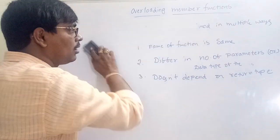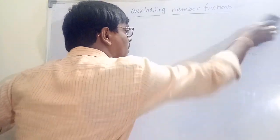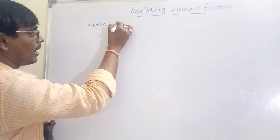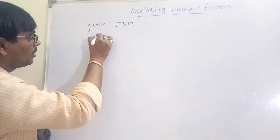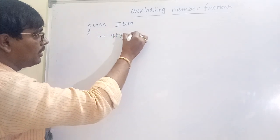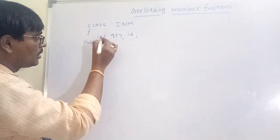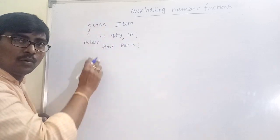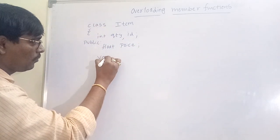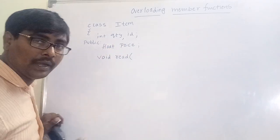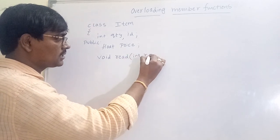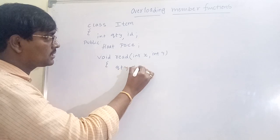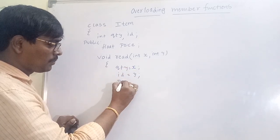Now we will discuss an example — it is very easy to understand each and every concept. Consider class `item` with `int quantity`, `id` as private members and `float price`. The first overloaded function: `void read(int x, int y)` — quantity equals x, id equals y, and price is set to 100 by default.